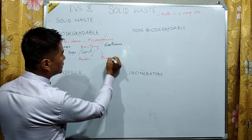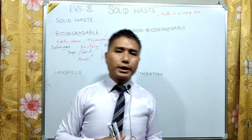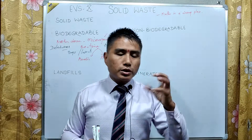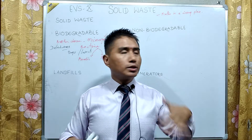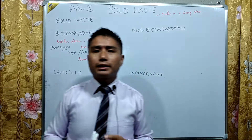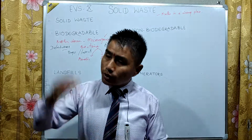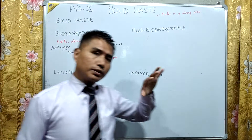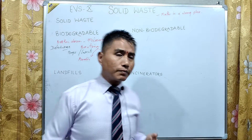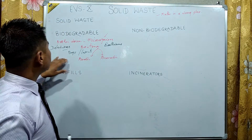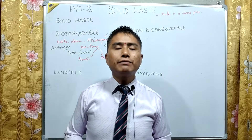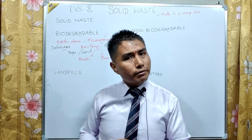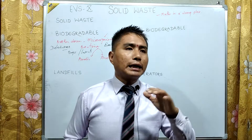Bacteria are of two types: aerobic bacteria, which use oxygen to eat waste and convert it into humus, and anaerobic bacteria, which do not need oxygen to digest the waste. Earthworms are also very important — they make the soil porous and are known as the farmer's friend. Bugs break fallen leaves into small bits, and detritivore insects also help. Biodegradable wastes are degraded over time by microorganisms and detritivores.